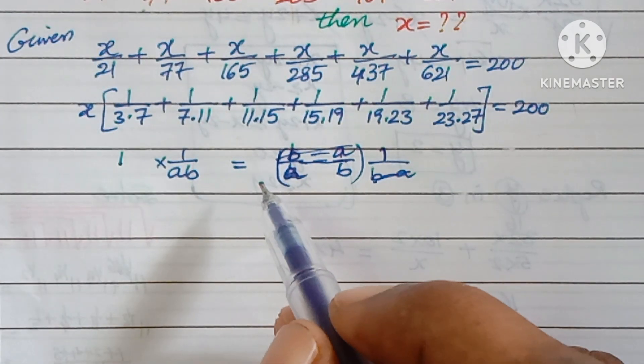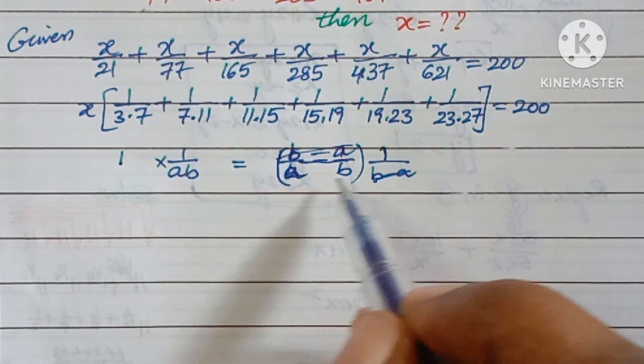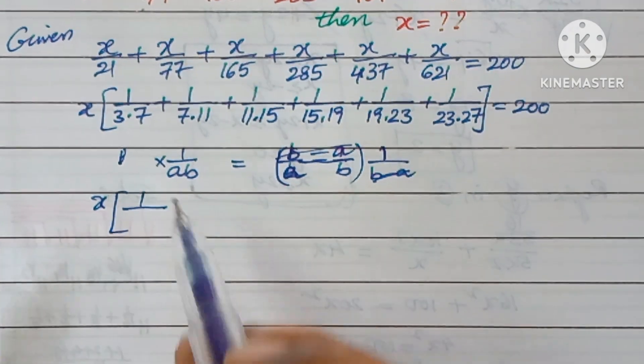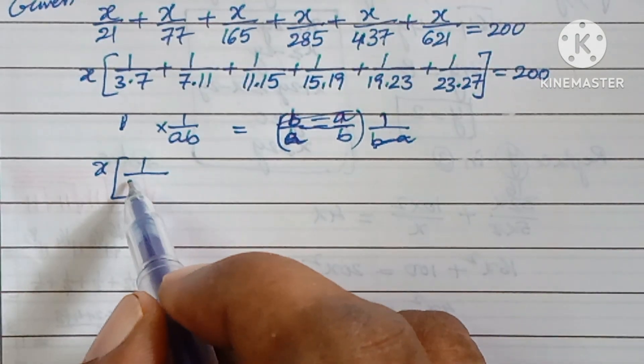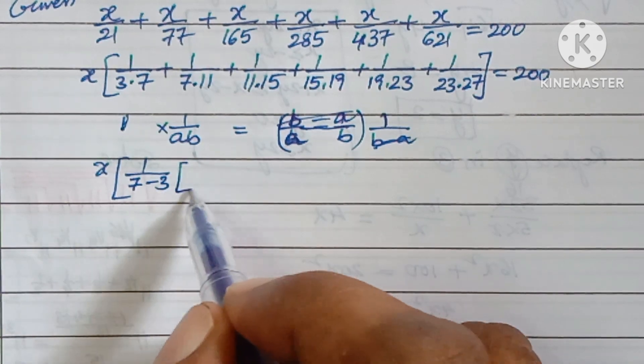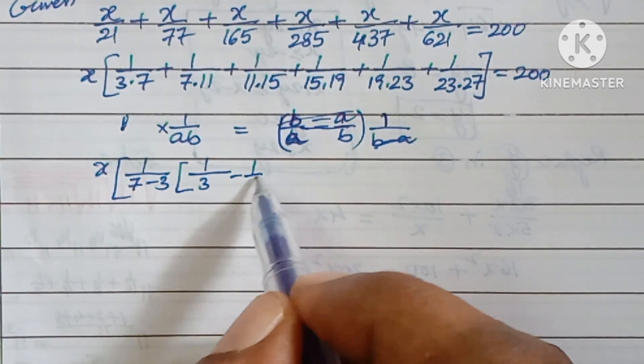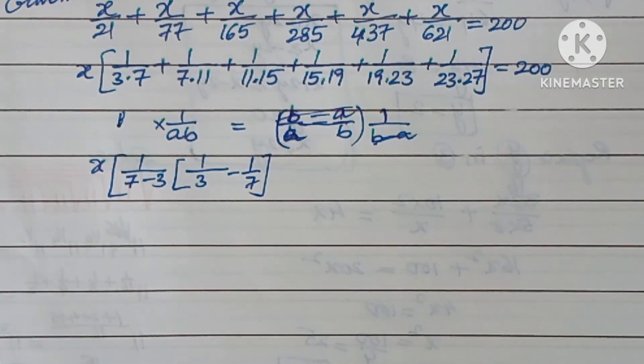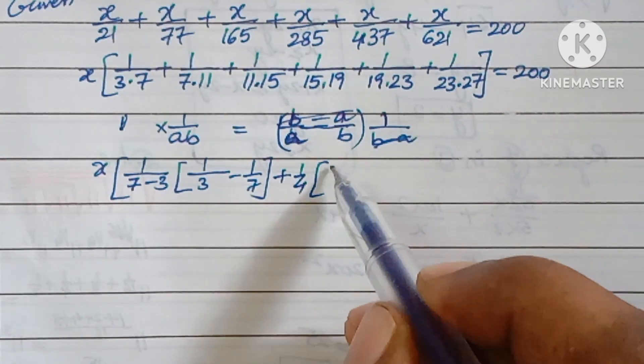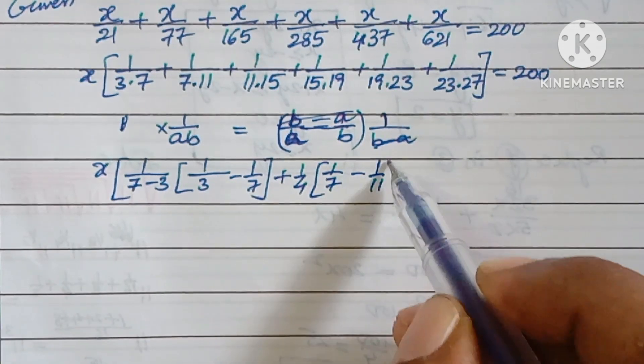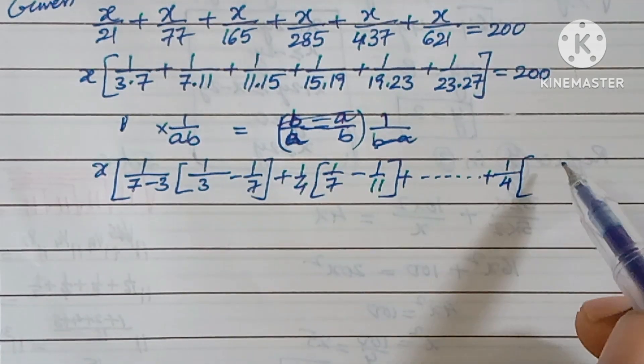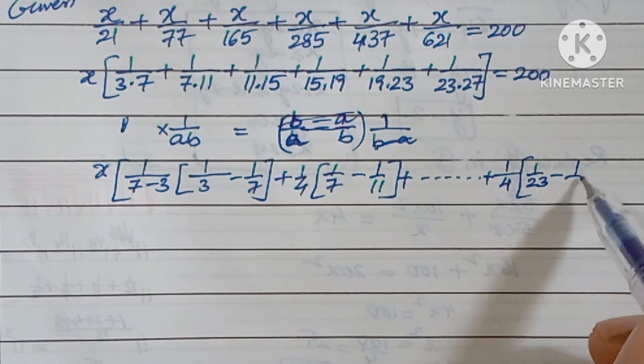So here, x × 1/(b - a). Here b - a = 7 - 3 = 4, so x × 1/4 × (1/3 - 1/7) + 1/4 × (1/7 - 1/11) + ... + 1/4 × (1/23 - 1/27) = 200.